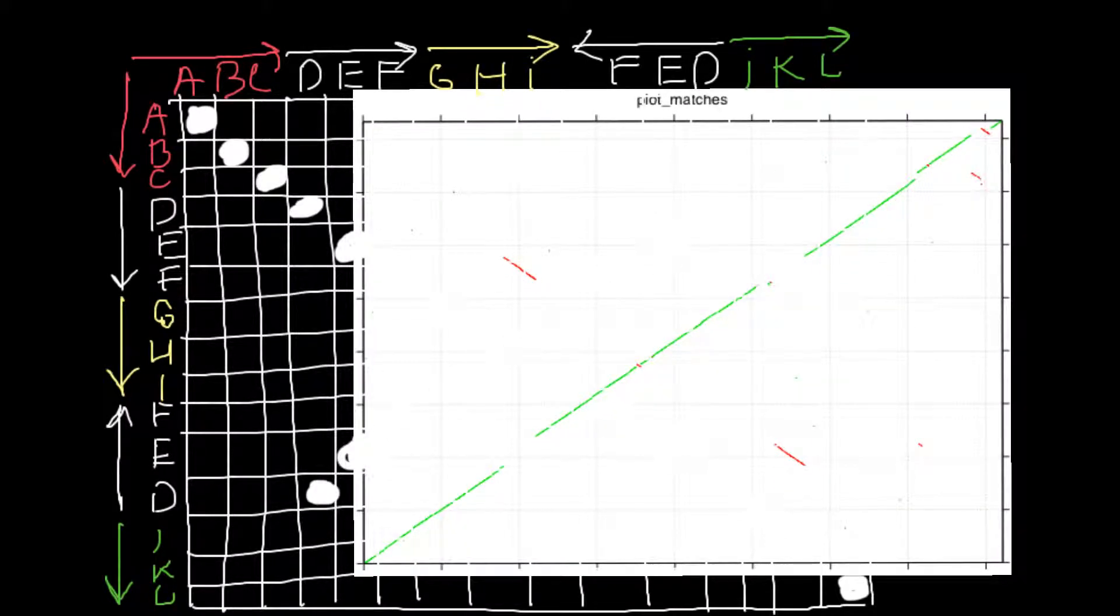But here, on this graph, we have zero point that starts here. So here is our X axis and Y axis here.